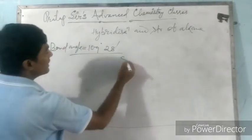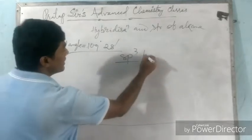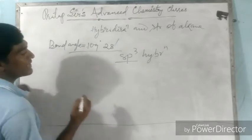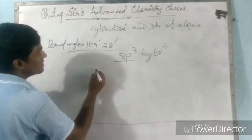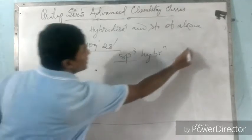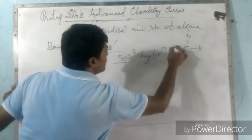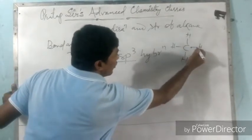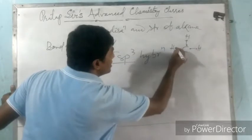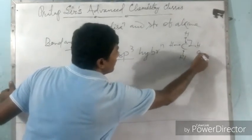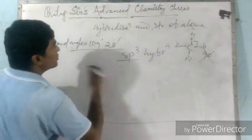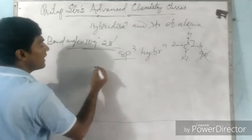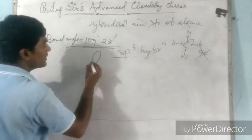As you know, alkanes make sp3 hybridization, so 4 hybrid orbitals are arranged at equal distance. If we draw the structure of carbon — this is CH4 — the Lewis structure shows 90 degrees, but that is actually not the case. We have to show how this is 109 degrees 28 minutes.